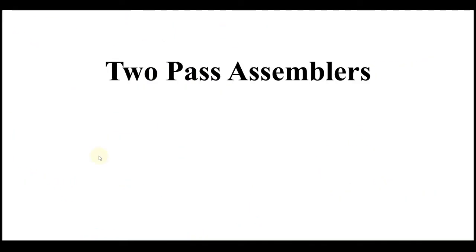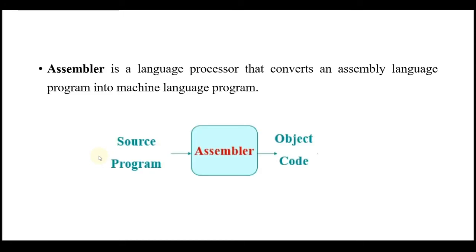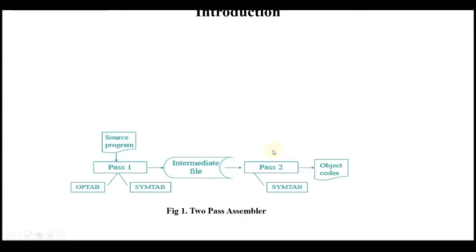Hello friends, today we are going to see two-pass assembler. Before that, we are going to learn some basic concepts related to two-pass assembler. An assembler is a language processor that converts an assembly language program into a machine language program. The input is a source program given to the assembler, and the output is object code or machine code.